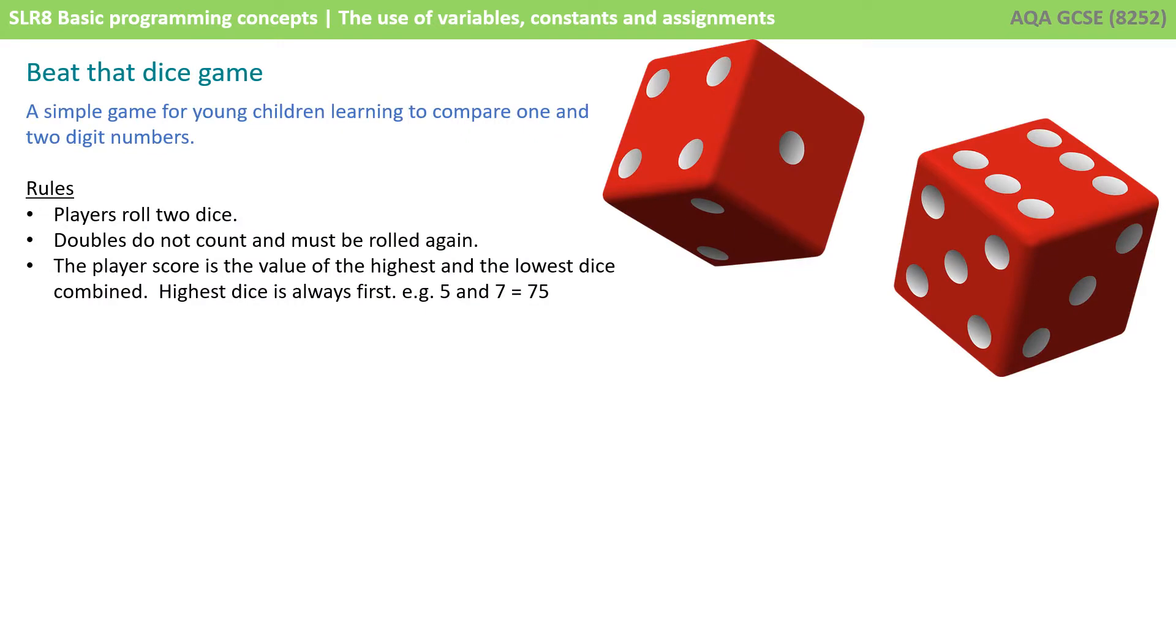So in order to go through these concepts, we're actually going to use a simple program written in Python, a beat that dice game. So this is a simple game for young children learning to compare one and two digit numbers. The rules are simple. A player rolls two dice, doubles do not count and must be rolled again. The player's score is the value of the highest and the lowest dice combined. And the highest dice is always first. So if a five and a seven were rolled, the result would be 75.